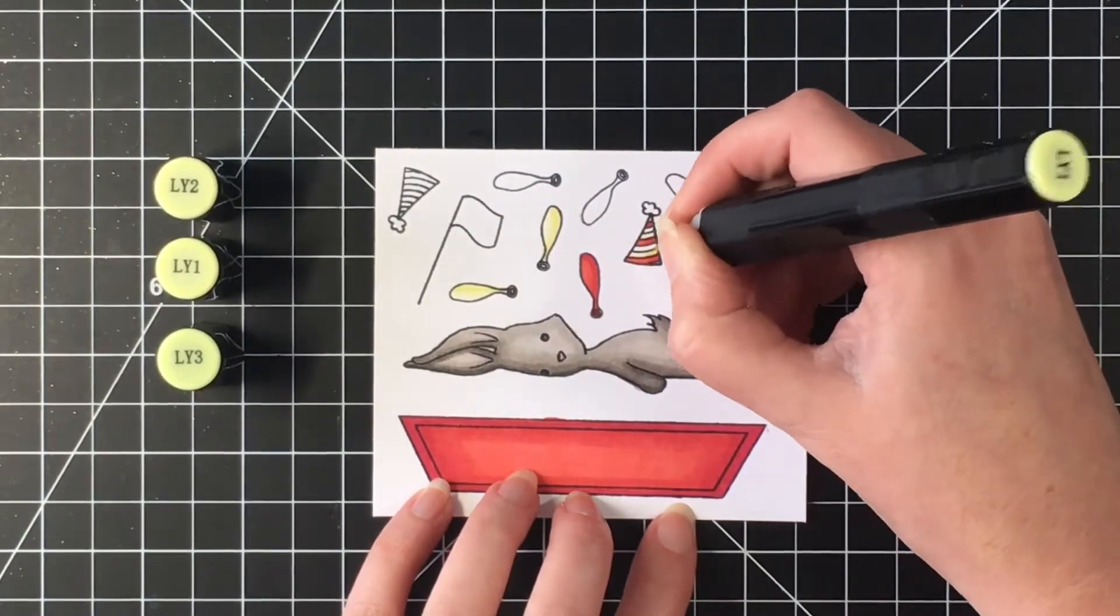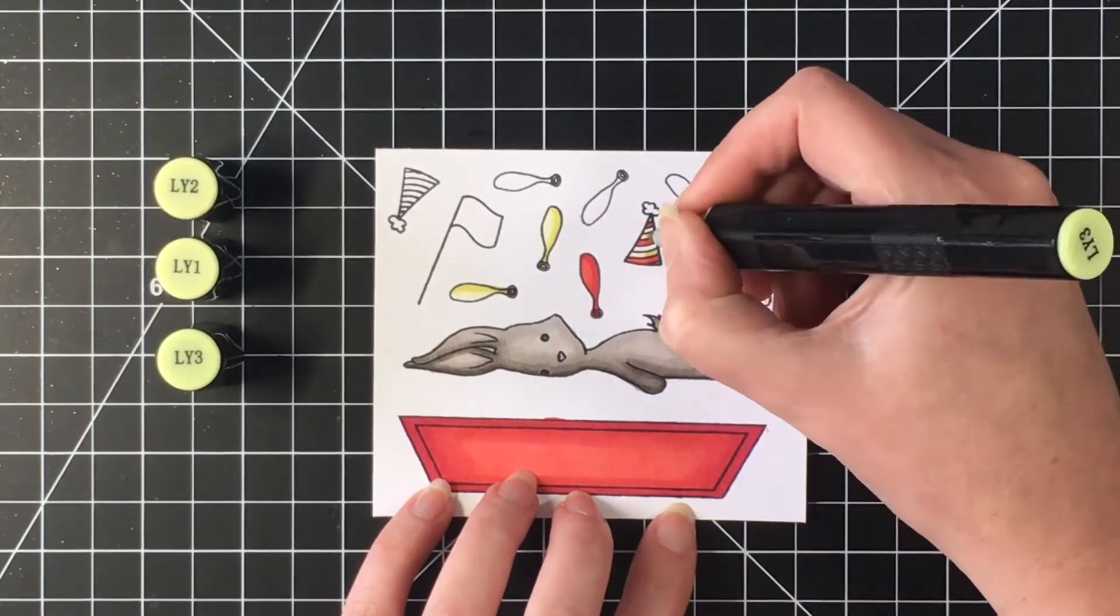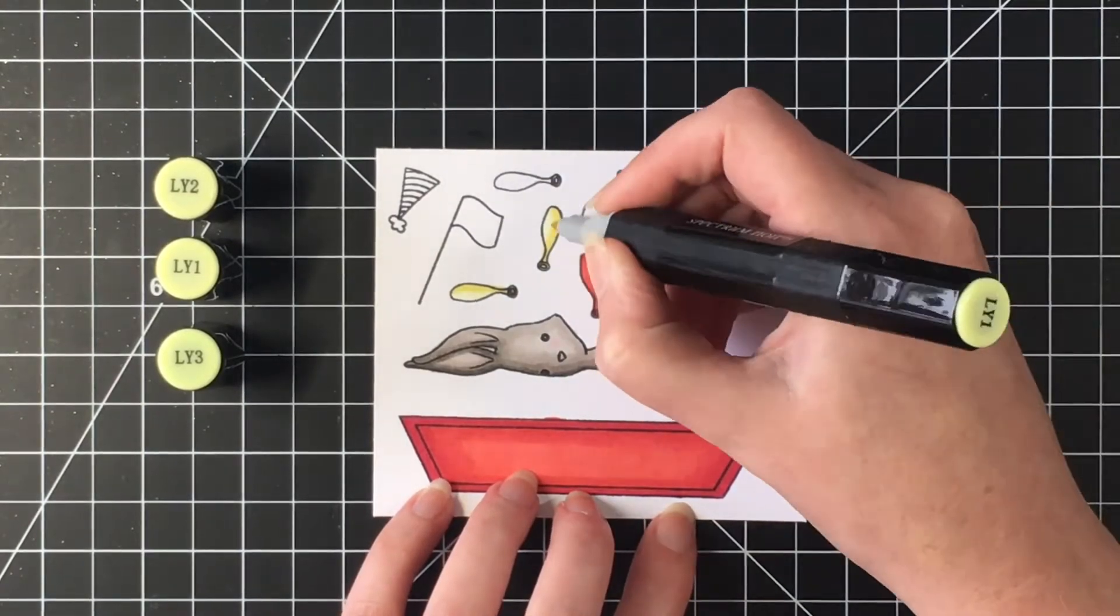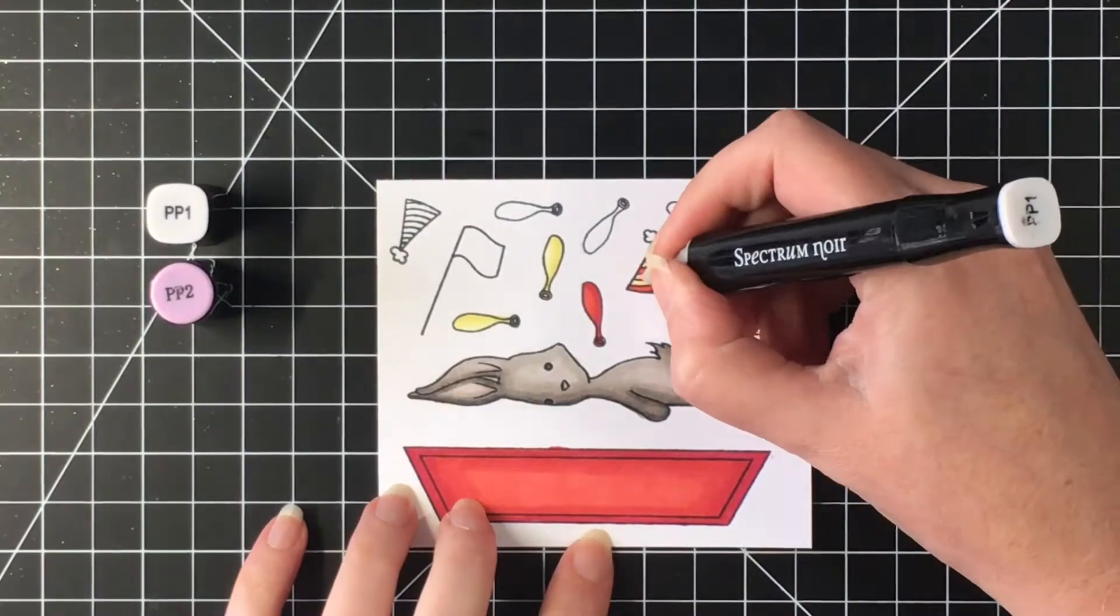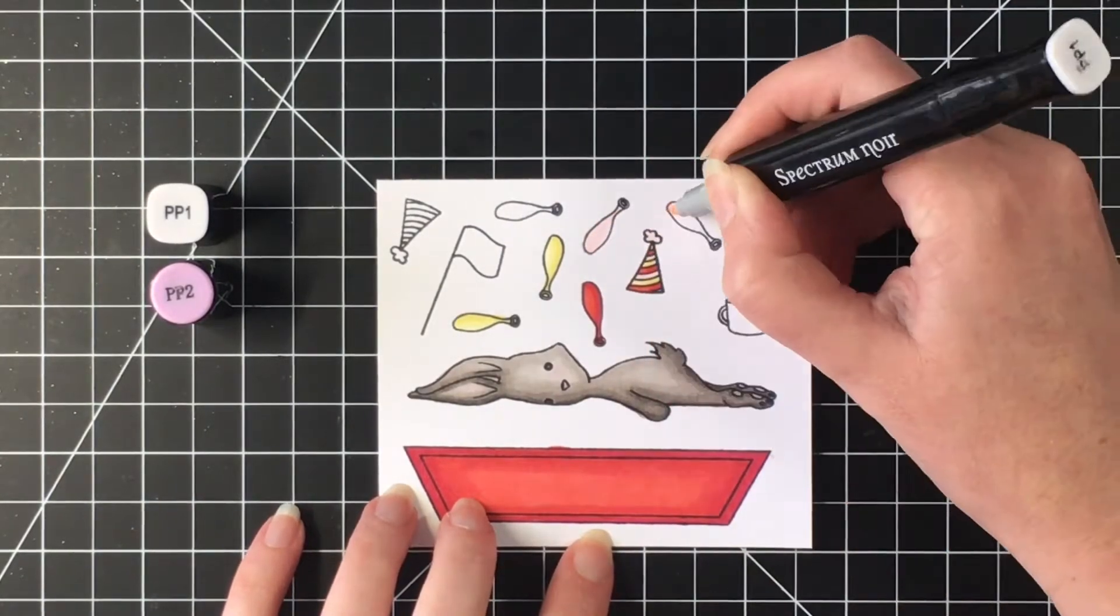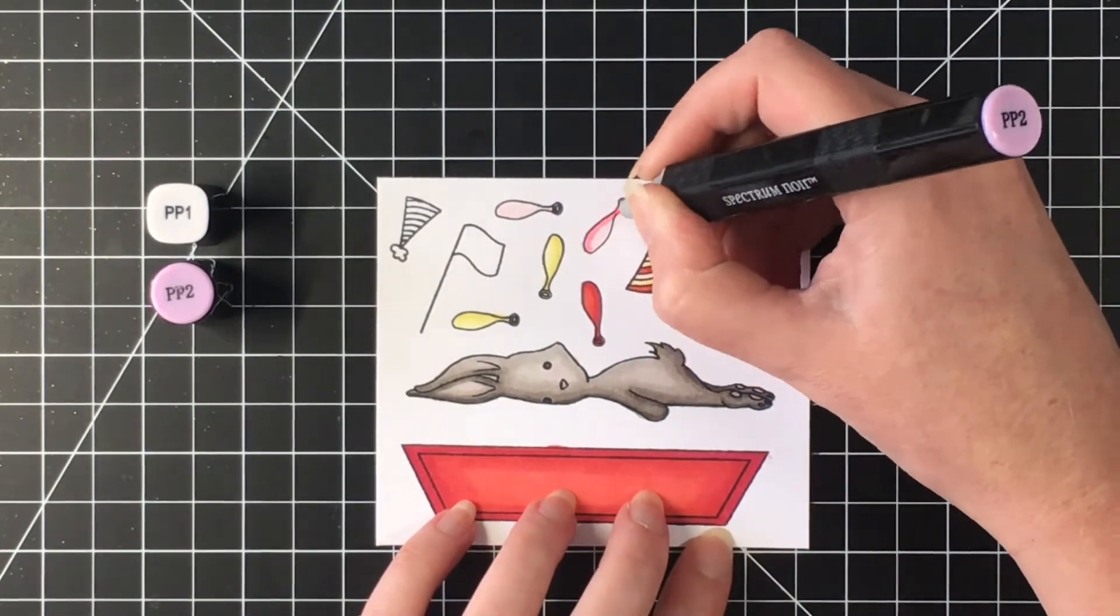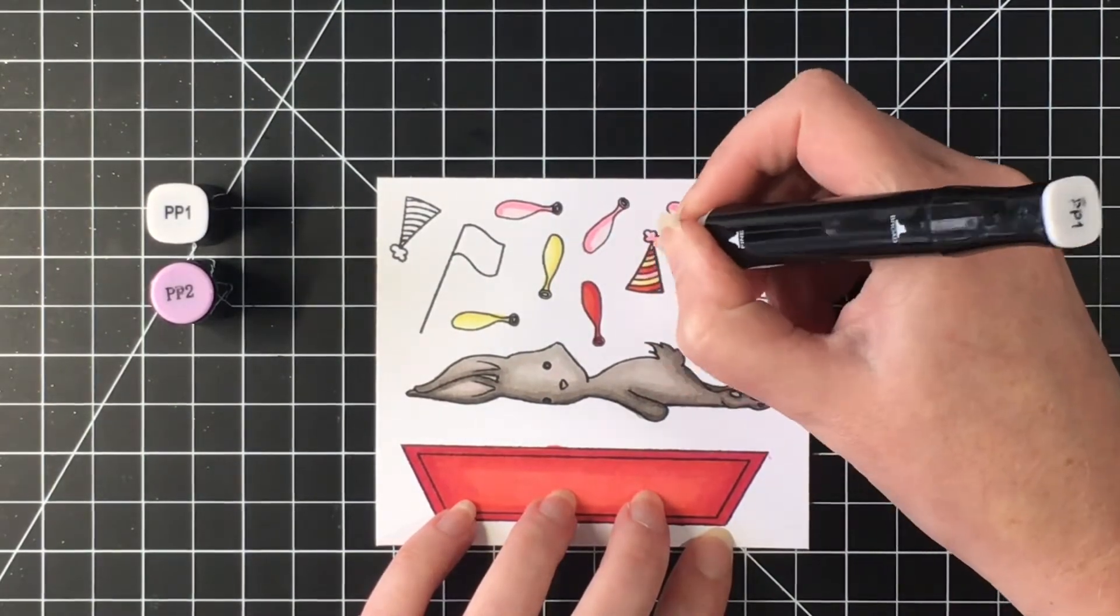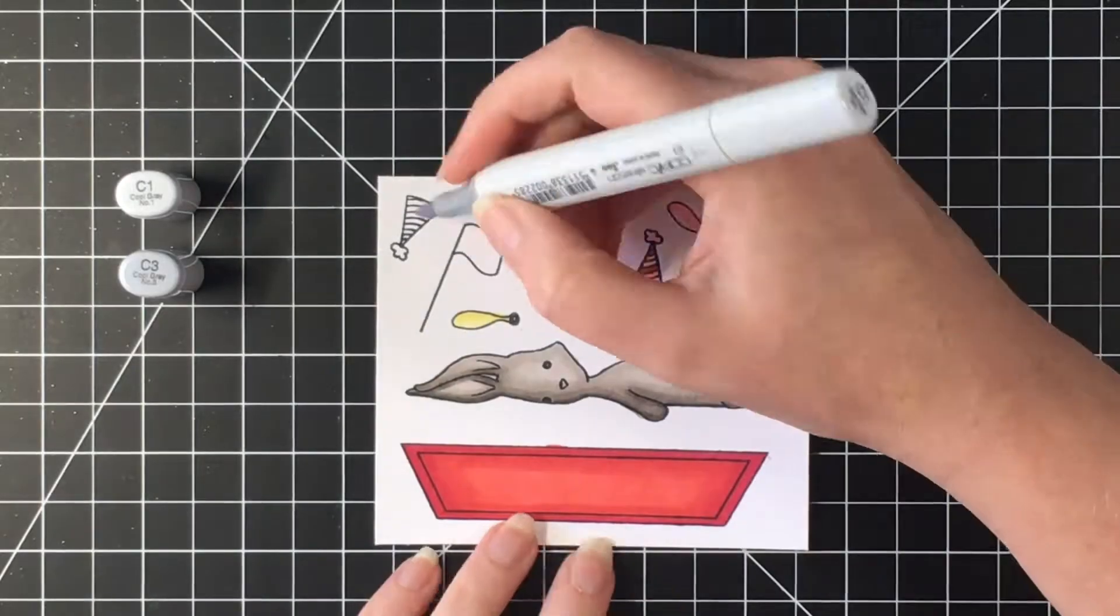So I'm just going to use some yellow. I'm going with the colors in the paper in order to guide what colors I'm going to be using for the images. The paper has red, pink, yellow, and teals in it. I don't believe I use any teal for this card because the paper didn't have any that I'm using.